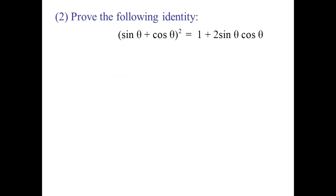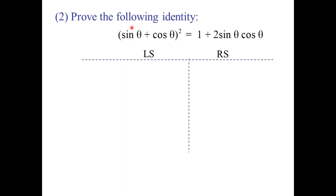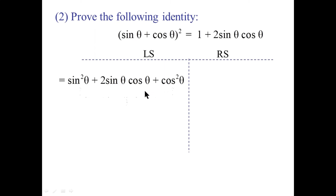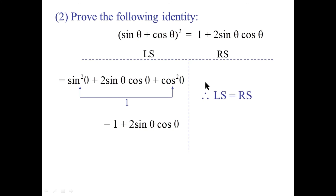Let's do this a couple more times. Prove that sine theta plus cosine theta, squared, equals 1 plus 2 sine theta cosine theta. Draw a line underneath the equal sign and work with the left side. Squaring the binomial gives three terms: sine squared, plus 2 sine theta cosine theta, plus cosine squared. Sine squared plus cosine squared is 1 by the Pythagorean identity, so we have 1 plus 2 sine theta cosine theta, which matches the right side. Therefore, left side equals right side.